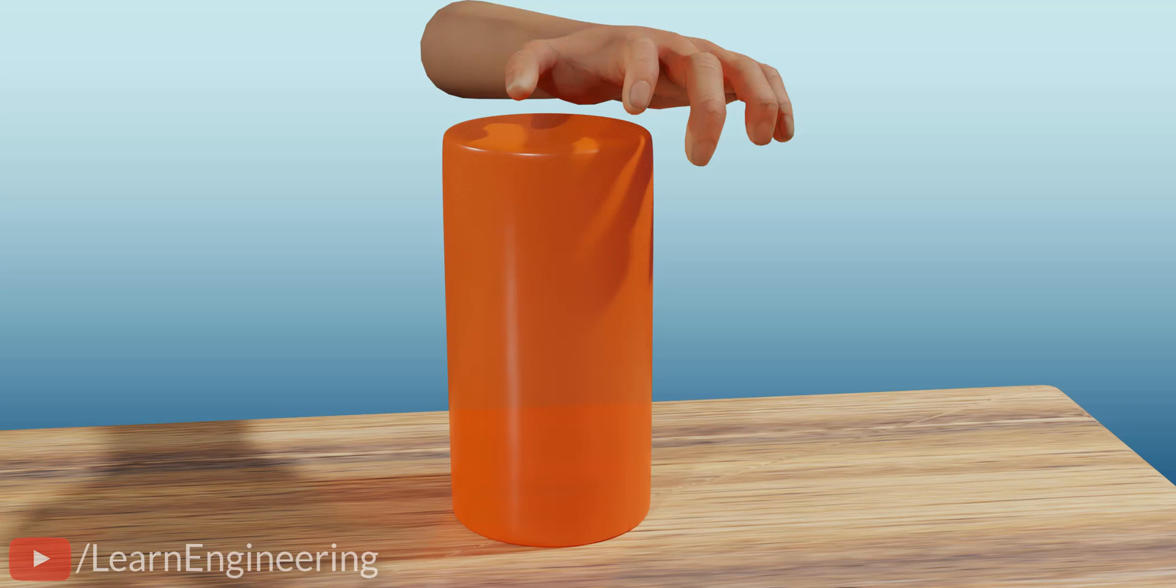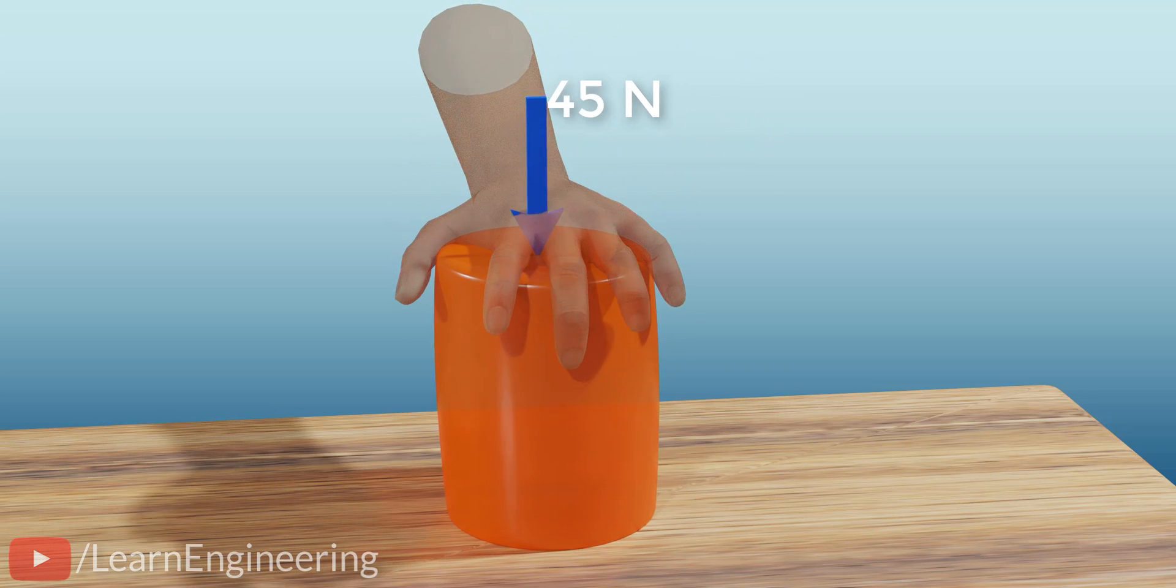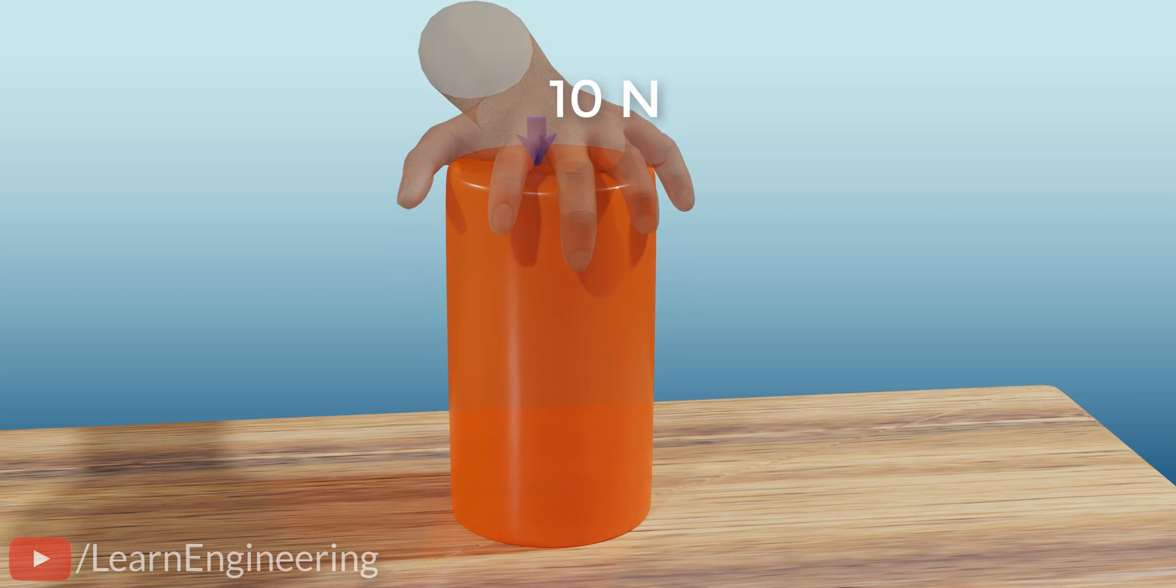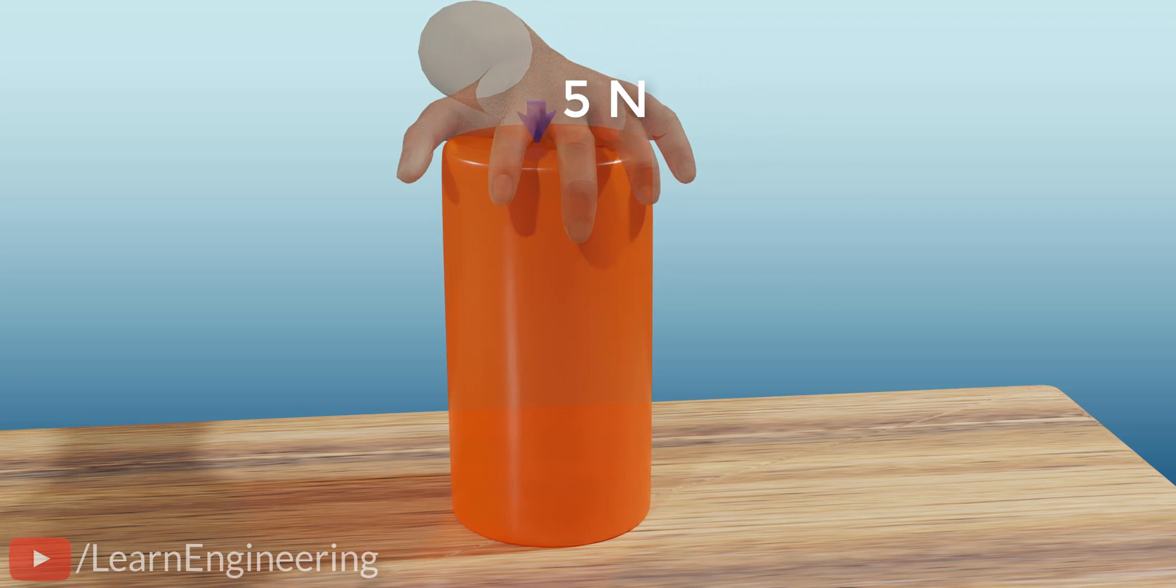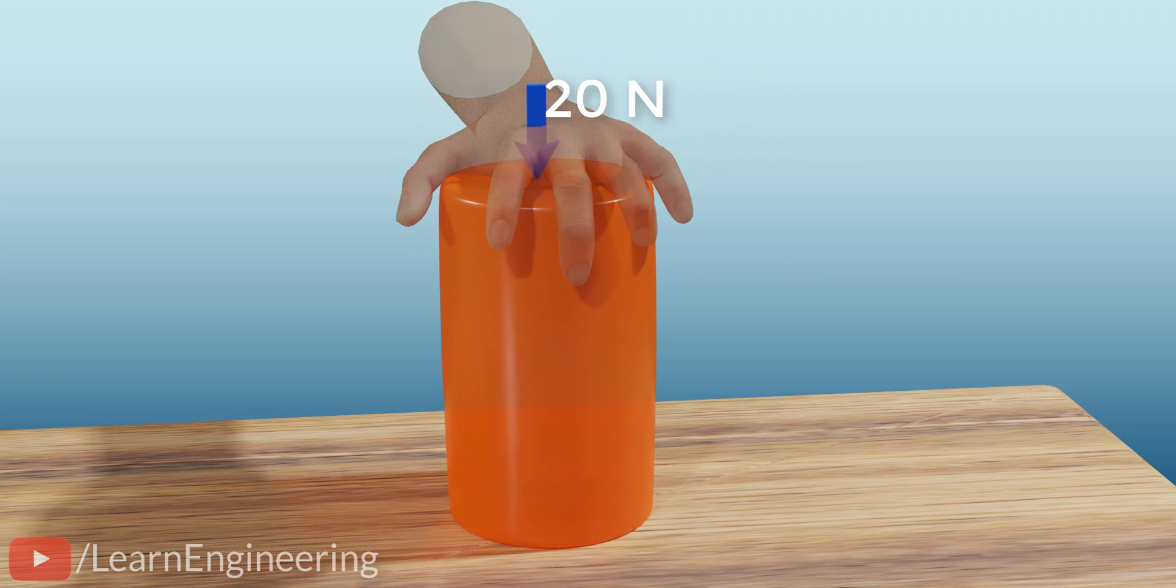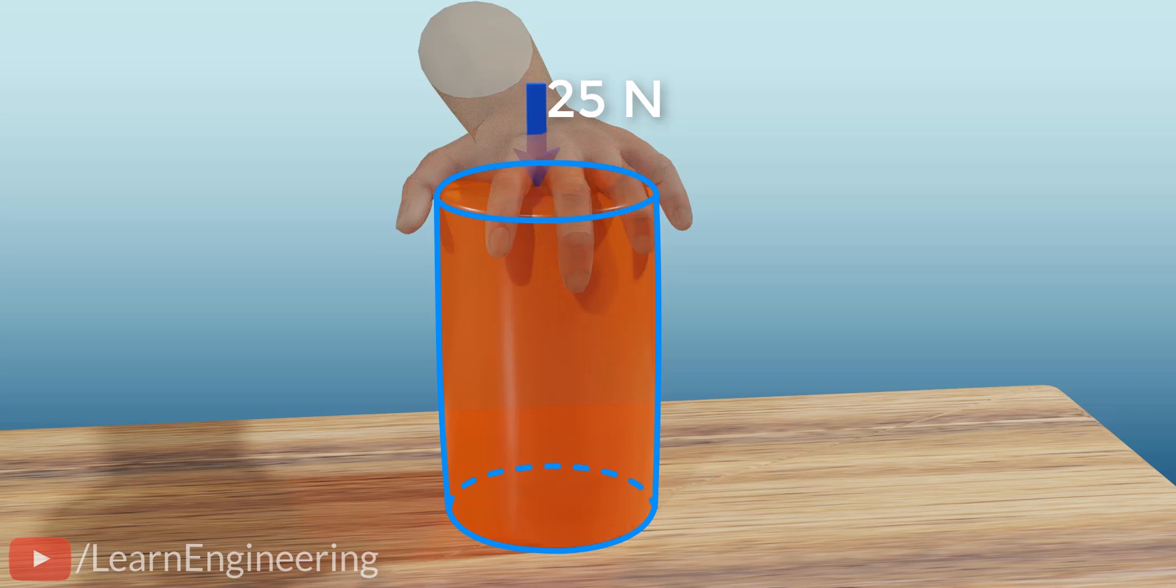Let's conduct the force experiment again. The force varies from 0 to 50 newton and back to 0 newton. Let's play this experiment in slow motion and pause when the force reaches 25 newton. Let's capture the shape of the cylinder at this instance.